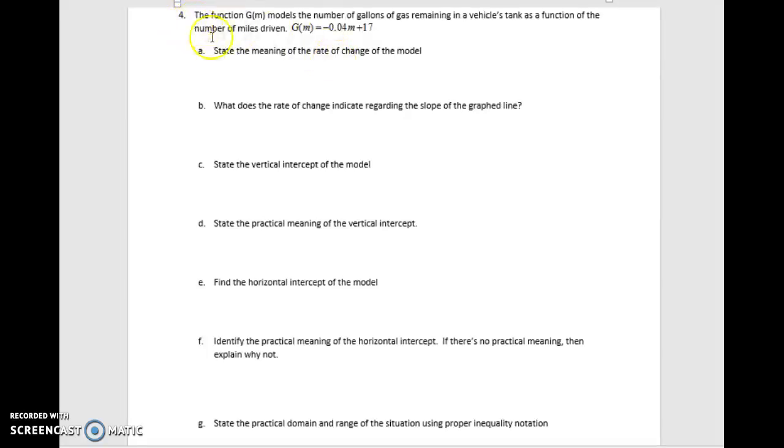In this, we're going to look at question number 4 from the student page. The function G of M models the number of gallons of gas remaining in a vehicle's tank as a function of the number of miles driven.